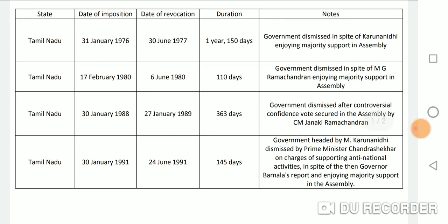Tamil Nadu: Date of imposition — 17 February 1980. Date of revocation — 6 June 1980. Duration — 110 days. Notes: Government dismissed after a controversial confidence vote secured in the assembly by Chief Minister Janaki Ramachandran.